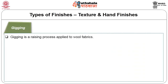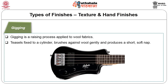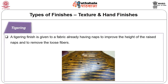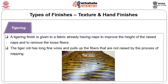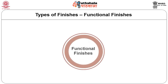Jigging is a raising process applied to wool fabrics — teasers fixed to cylinder brushes against wool gently and produce a short soft nap. Tigering finish is given to a fabric already having naps, to improve the height of the raised naps and to remove the loose fibers. The tiger roll has long fine wires and pulls up fibers that are not raised by napping.